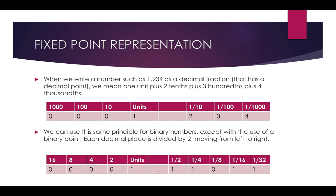On the right hand side of the binary point, each place we divide by two moving from left to right. On the left hand side of the binary point we have units or 1, then we have 2, 4, 8, and 16 — multiplying by 2 every time. Remember this is base 2. The decimal number system is base 10 with digits 0 to 9, while the binary number system is base 2 with only digits 0 and 1. So on the right hand side of the binary point we have 1 over 2, 1 over 4, 1 over 8, 1 over 16, 1 over 32.